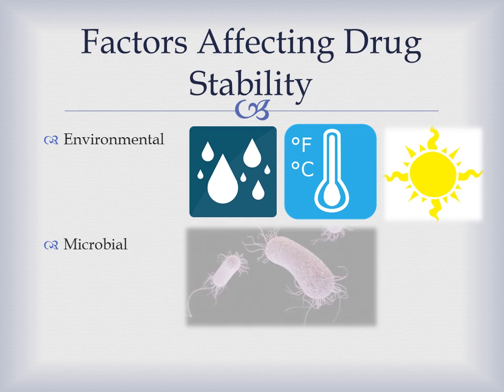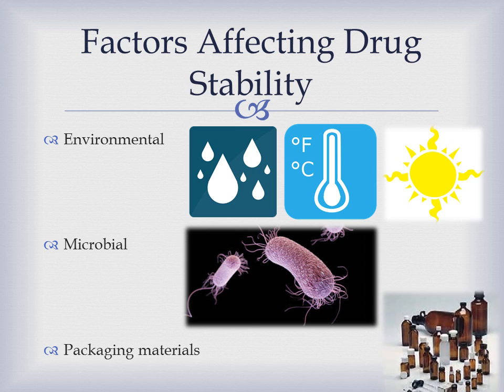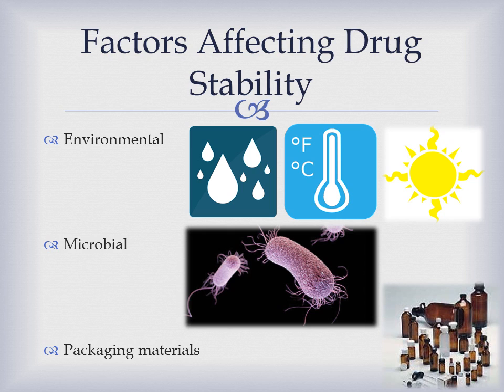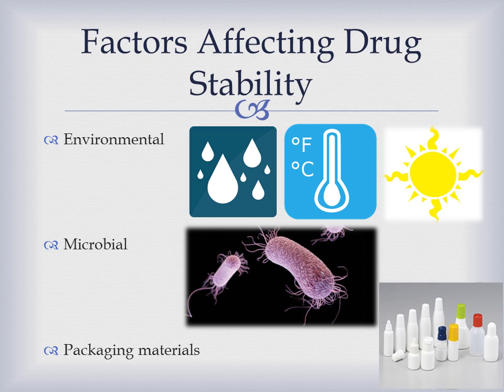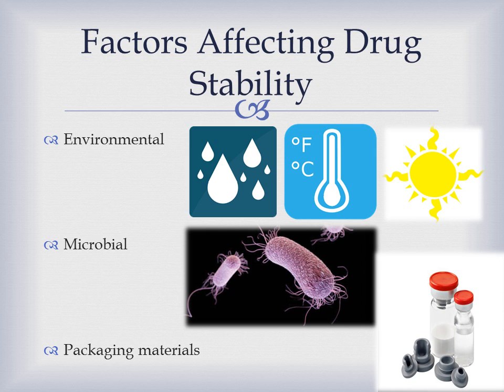Sources of microbial contamination are classified as water, air, raw materials such as starch and pigments, gums, animal products, and personnel. The packaging materials may contain glass containers, plastic containers, metals such as various alloys and aluminum tubes, and finally rubber, with the risk of leaching container ingredients.